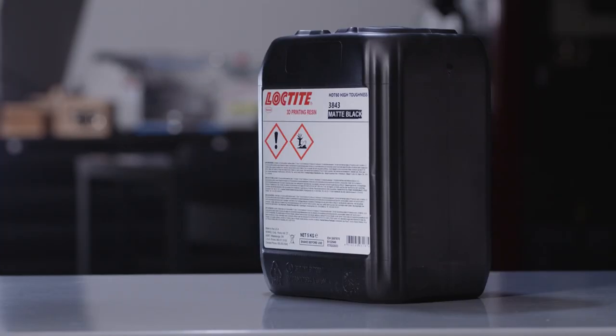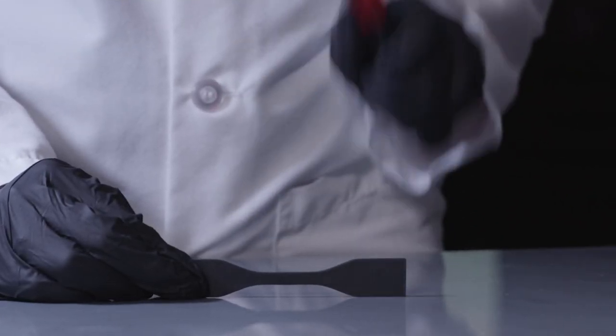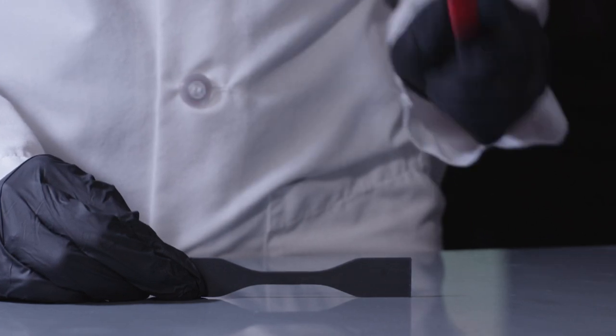Loctite 3D3843 HDT60 High Toughness is a semi-flexible resin with moderate temperature resistance. It is tough with an outstanding surface finish and also has superior strength and impact resistance.